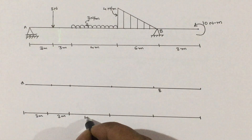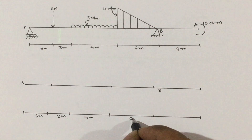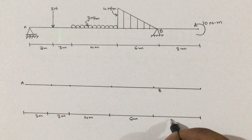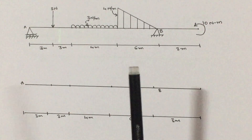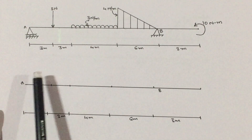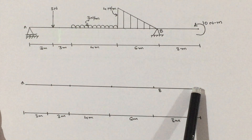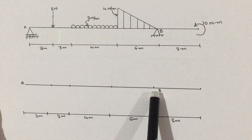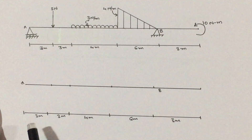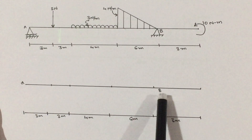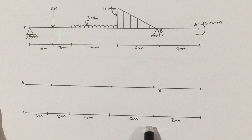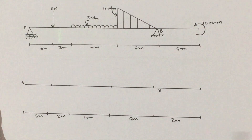Leave some gap and write the distances: 3 meter, 3 meter, 4 meter, then 6 meter and 3 meter. So we wrote the horizontal line, then indicated the points, then wrote the distances — line, points, distances. This is the first step.